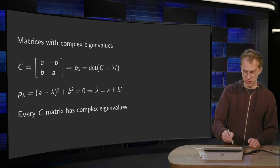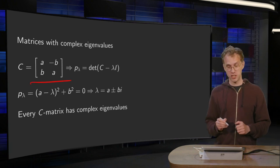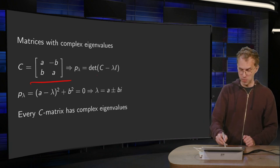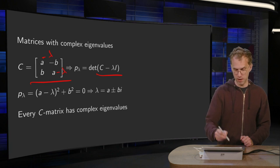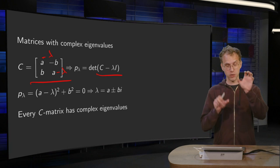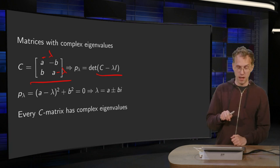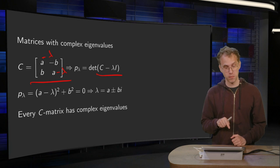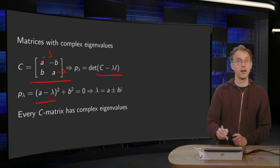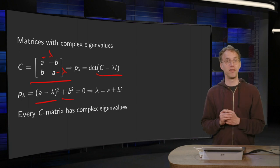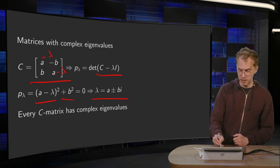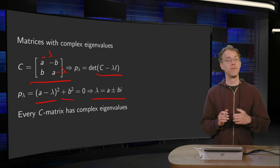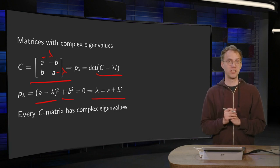Let's start with the scaling rotation matrix C and take a look at its eigenvalues. We compute the determinant of C minus lambda times the identity, putting minus lambda on the diagonal. So you get p(λ) = (a − λ)² + b². In order to find the eigenvalues you set it to zero, move b² to the other side, and you find lambda equals a plus or minus bi. So every scaling rotation matrix has complex eigenvalues.